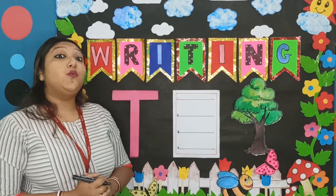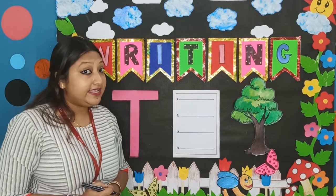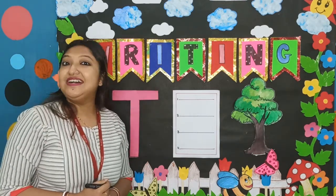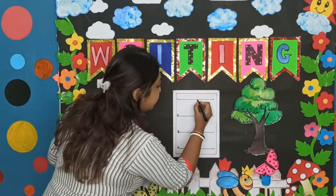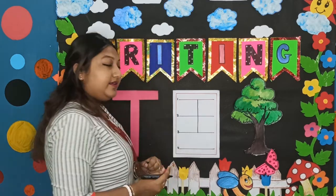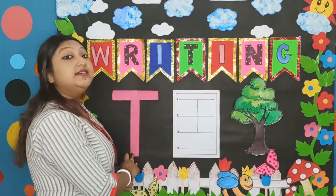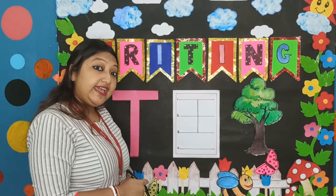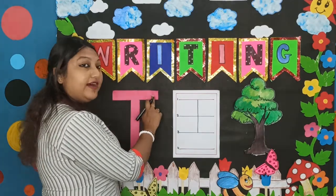For writing T, which line do you need to draw first? Sleeping line? No — big no-no! We will first draw the standing line. See? Standing line. Now I have already drawn the standing line. Which line will I draw next? I will draw the sleeping line now.